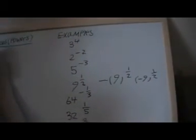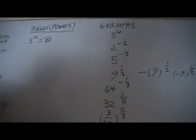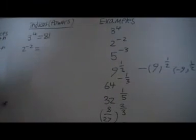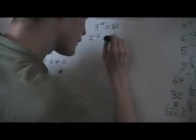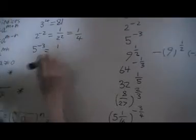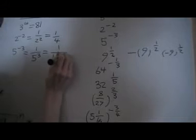Okay, so I've got some problems over here. First problem is 3 to the 4, and that just means 3 times by itself 4 times, which is 81. Just a bit of revision. This one we've got 2 to the minus 2. Using my fifth law here, we can rewrite that as 1 over 2 squared, which is a quarter. Next one, I've got 5 to the minus 3. Using my fifth law again, we can rewrite that as 1 over 5 to the 3. 5 to the 3 is 125, so that's 1 over 125.